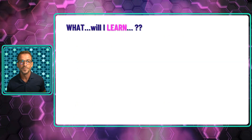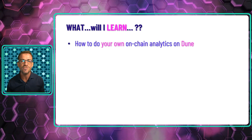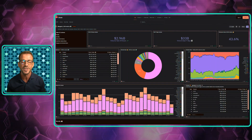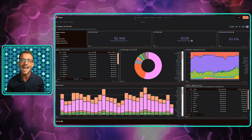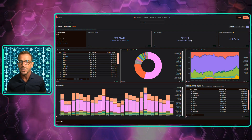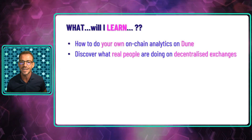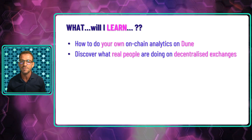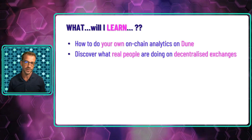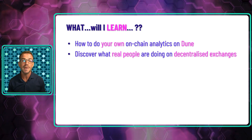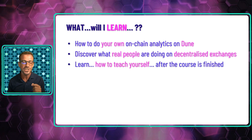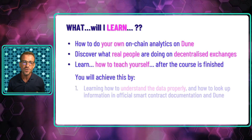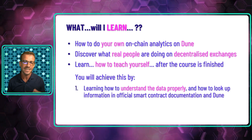So what is going to be taught? I'm going to teach you how to perform your very own on-chain analytics on Dune. This platform allows you to pull data directly from blockchains to analyze and chart them. You'll gain skills that allow you to create charts revealing what real people are doing on decentralized exchanges like Uniswap v2. What's going to make this course extra special is that I'm going to teach you these skills in a way that empowers you to continue teaching yourself after this course is over, so you're able to go beyond the areas that we cover.